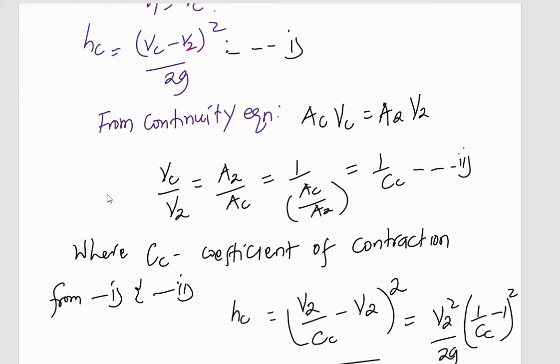But remember that the ratio of the vena contracta area divided by the area at point two gives us the coefficient of contraction. Therefore, if I make this reciprocal, it will be one over Ac divided by A2, and this will be the reciprocal of the coefficient of contraction. So if I substitute this in equation one, I will have hc equal to V2 over Cc minus V2, squared, over 2g.